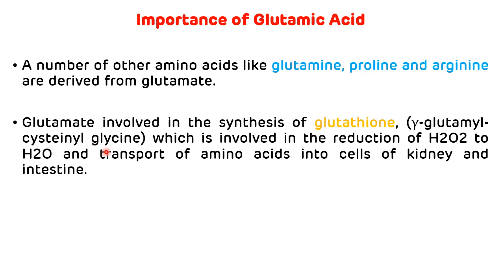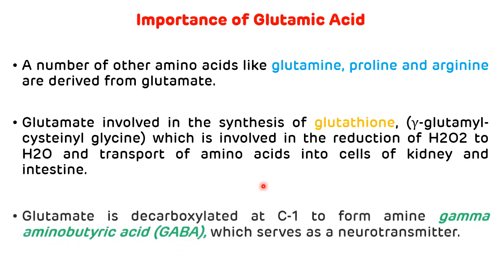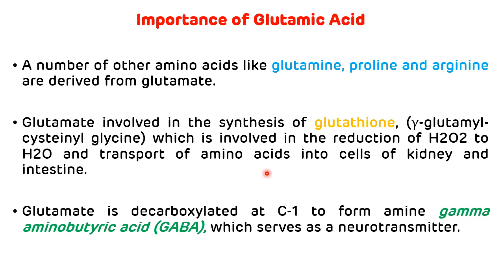Apart from glutamate, there is also the presence of cysteine and glycine — these three amino acids take part in the synthesis of glutathione. Glutathione is involved in the reduction of hydrogen peroxide to H2O, and it is also important for the transport of various amino acids into the cells of the kidney and intestine. That is the second importance of glutamic acid.